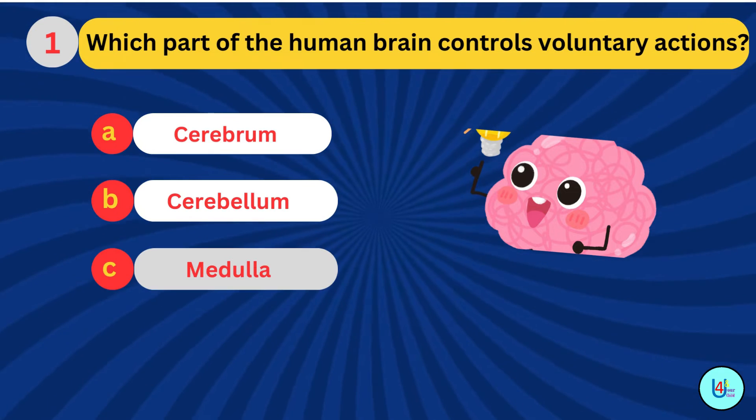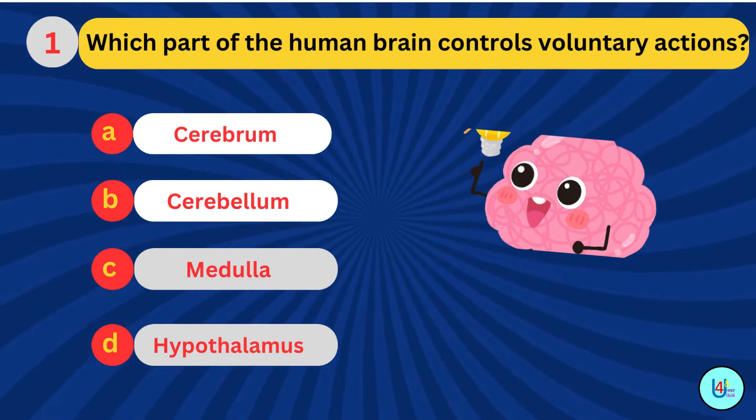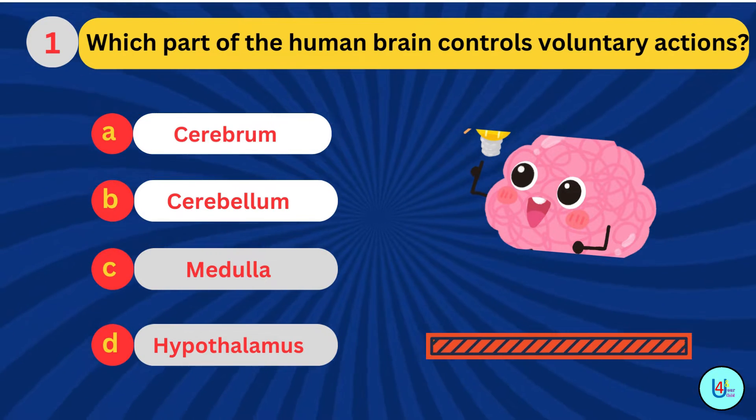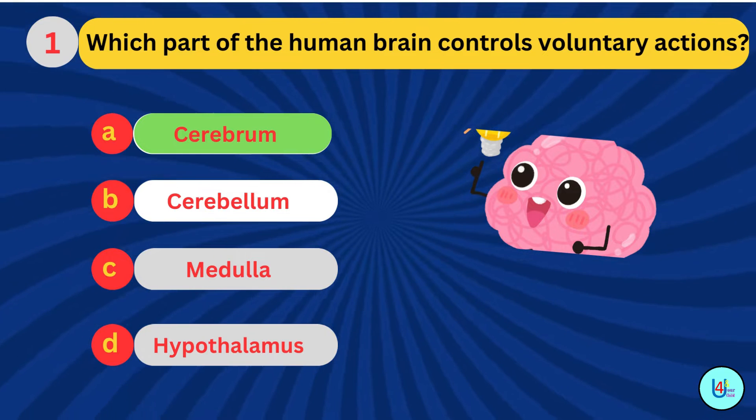Question number 1. Which part of the human brain controls voluntary actions? Cerebrum.